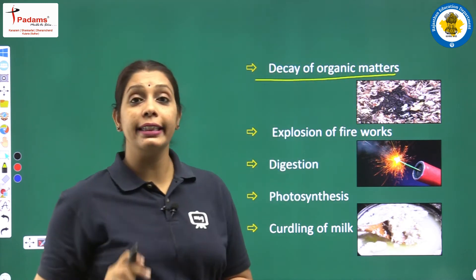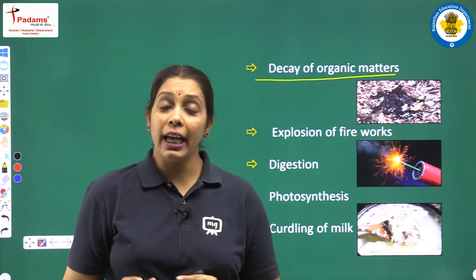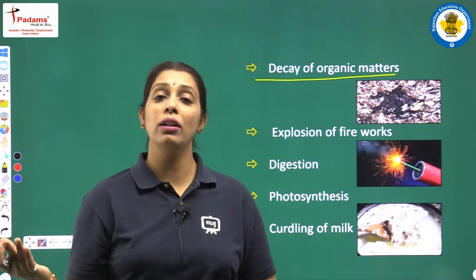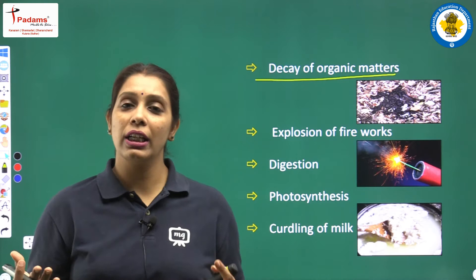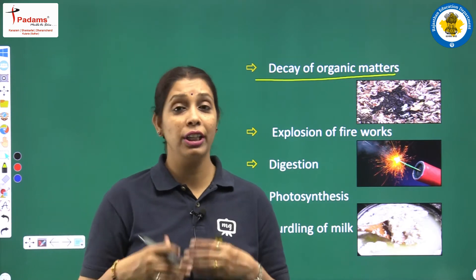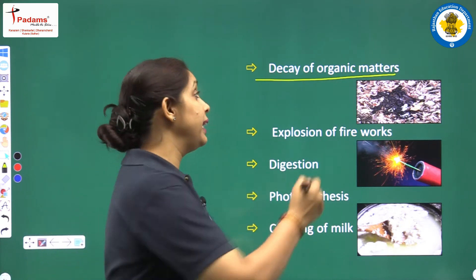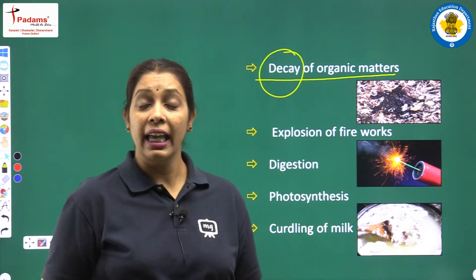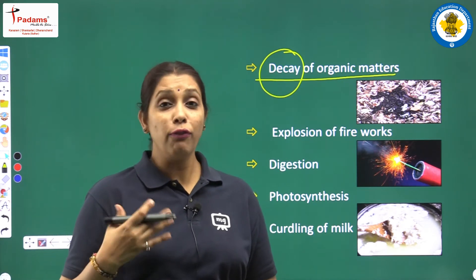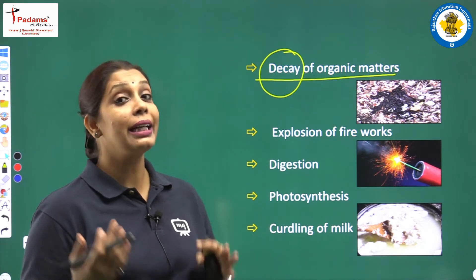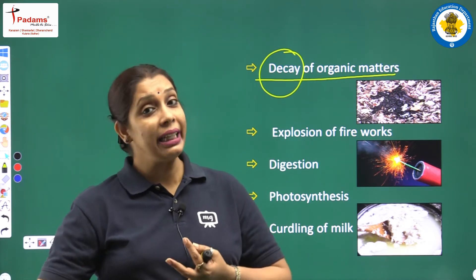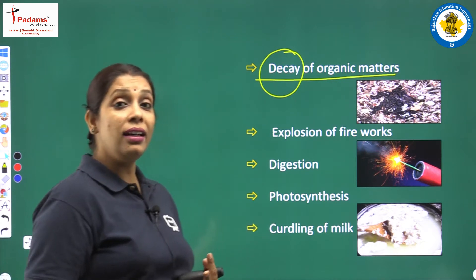Decay of organic matter is a chemical change. You might have seen leaves under a tree, or a street animal — if it dies by the roadside, after some time the body disappears and the leaves also disappear. Woh decay ho jaati hai, sar jaati hai, gal jaati hai. And when a street animal dies by the roadside, you can feel a foul smell. Hame smell mein change ho raha hai — cheezein degrade ho rahi hain. It is a chemical change.